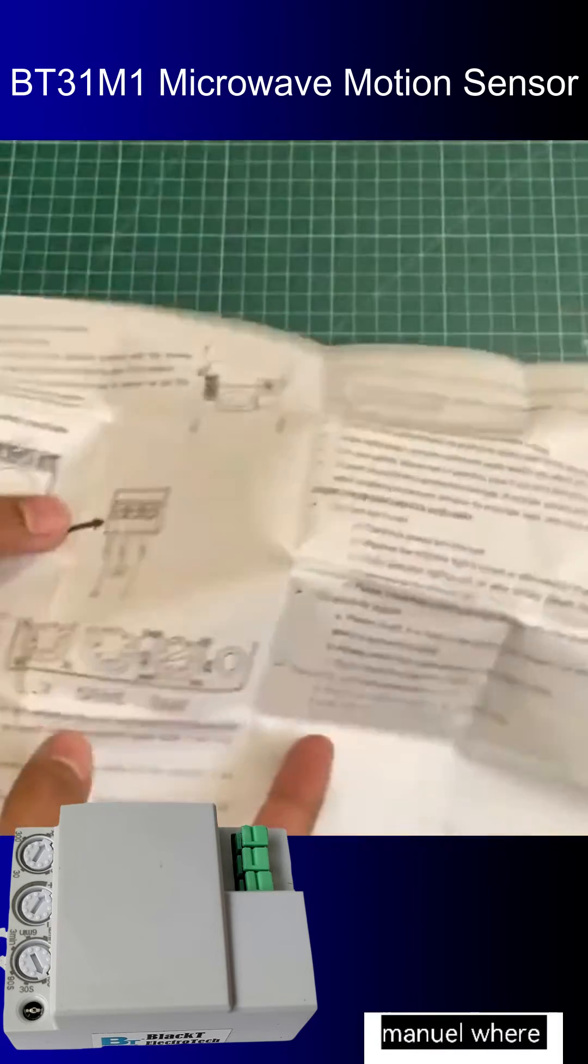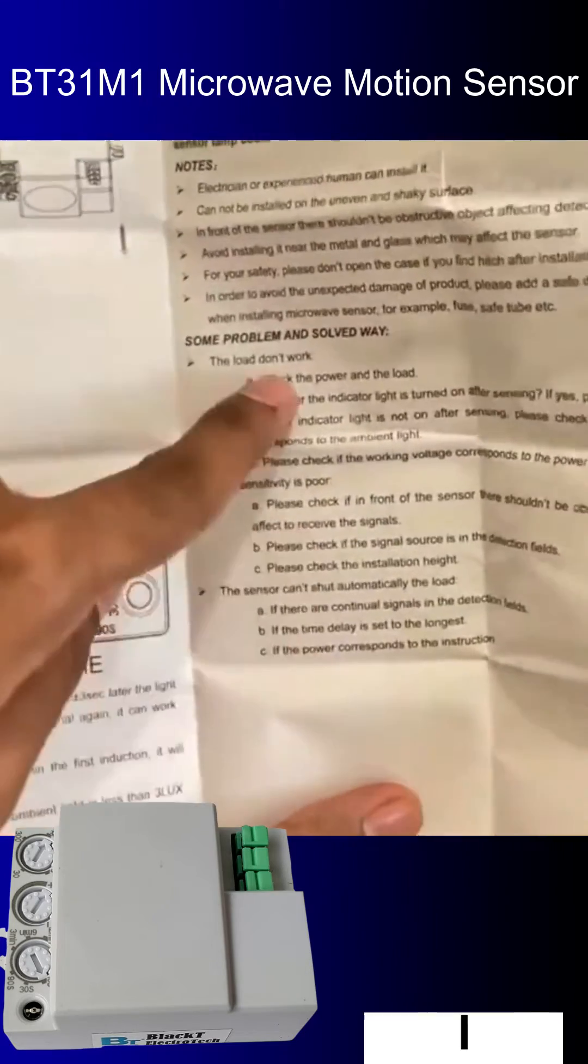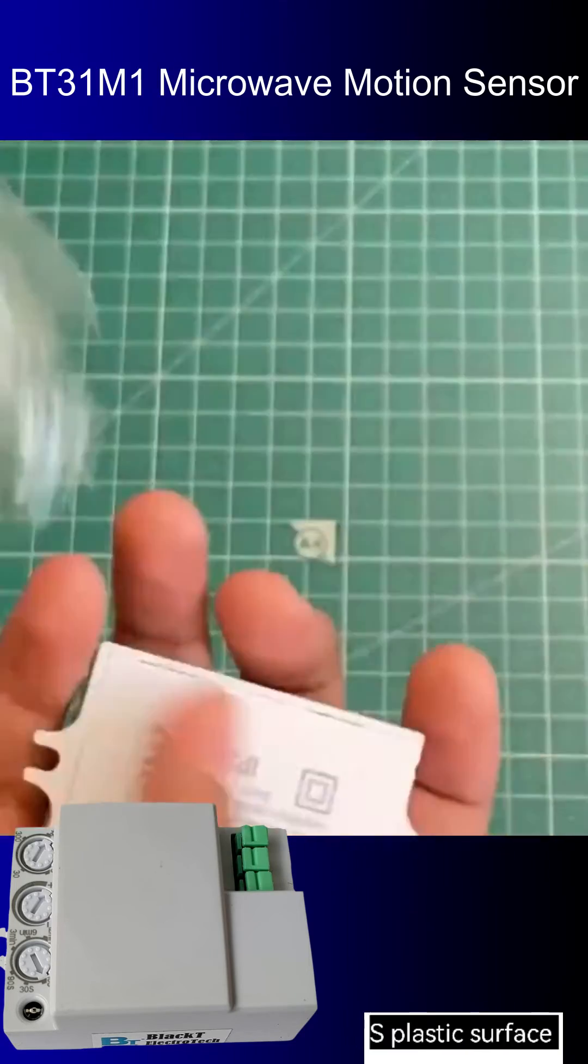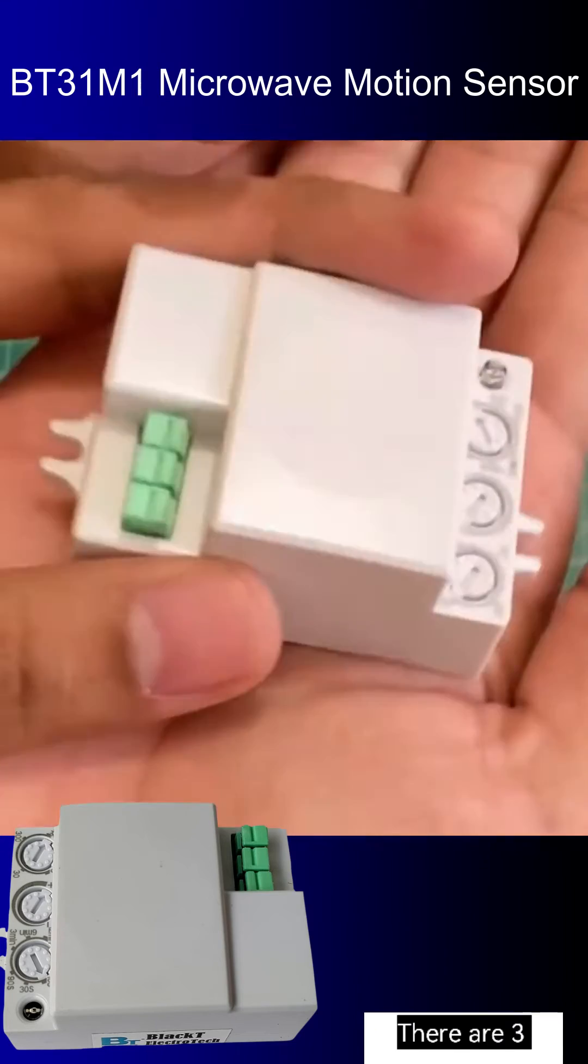So friends, we get instruction manual where it's installation and troubleshootings. And this is our sensor module. It is ABS plastic surface smooth finished. There are 3 connection provided.